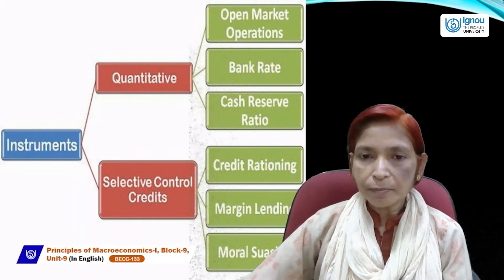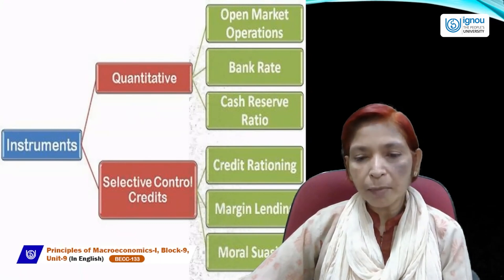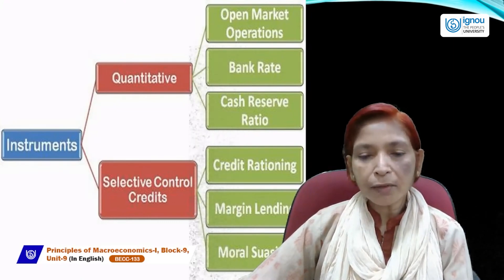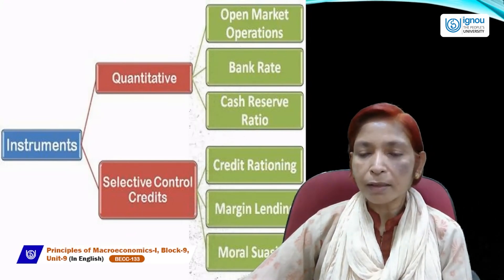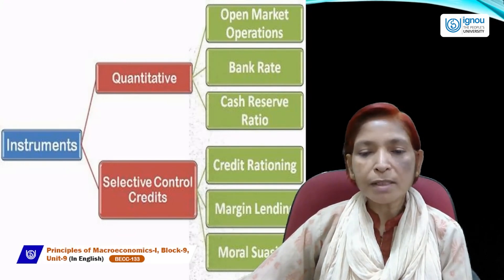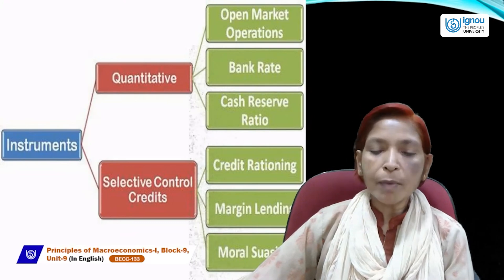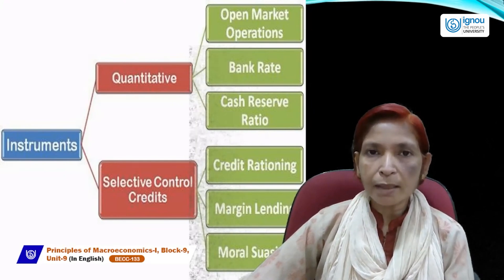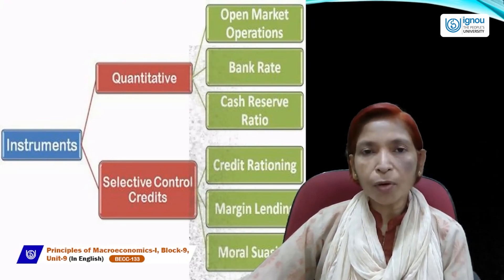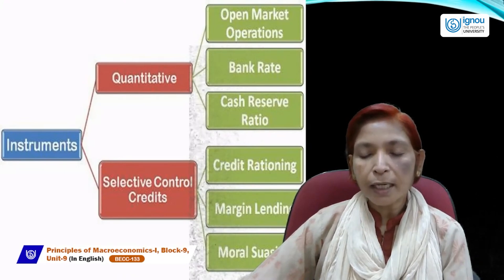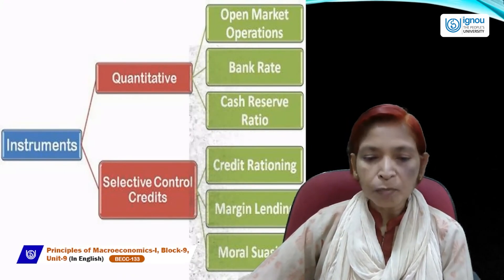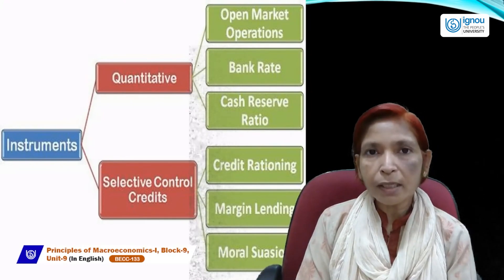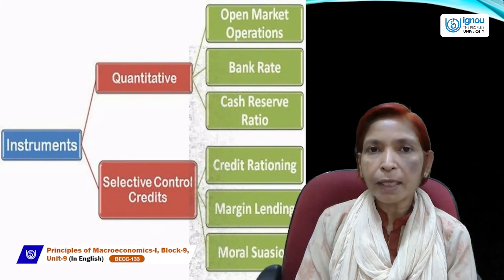Under selective credit control: Credit rationing — RBI fixes a limit or quota on credit. If RBI wants to control credit creation, it strictly enforces this limit. Margin lending — the pledge or mortgage amount required from borrowers. If margin lending increases, borrowing becomes more expensive, borrowers take less loans, and the economy contracts. Moral suasion — RBI morally pressurizes all commercial banks to follow its policy to regulate or contract money supply and control credit creation.